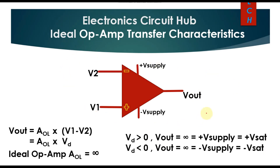This is the basic symbol of an operational amplifier, where two inputs are connected: V2 and V1. This is the positive power supply, this is the negative power supply, and this is Vout. We know that Vout equals Aol into (V1 minus V2) for an open loop. Aol is the open loop gain, and for an ideal op-amp the open loop gain is infinite. If we replace V1 minus V2 by Vd, Vd is the voltage difference between the two input terminals.